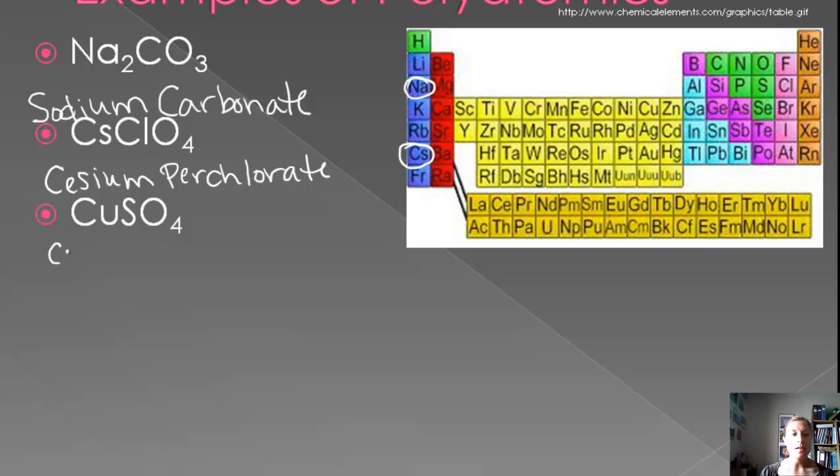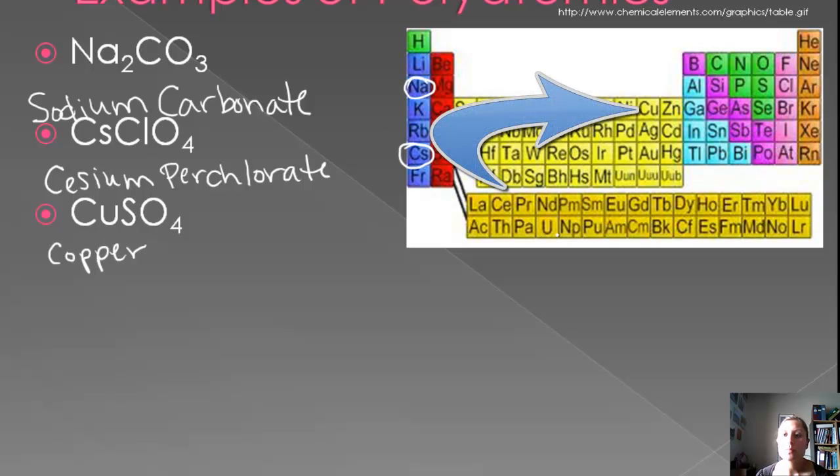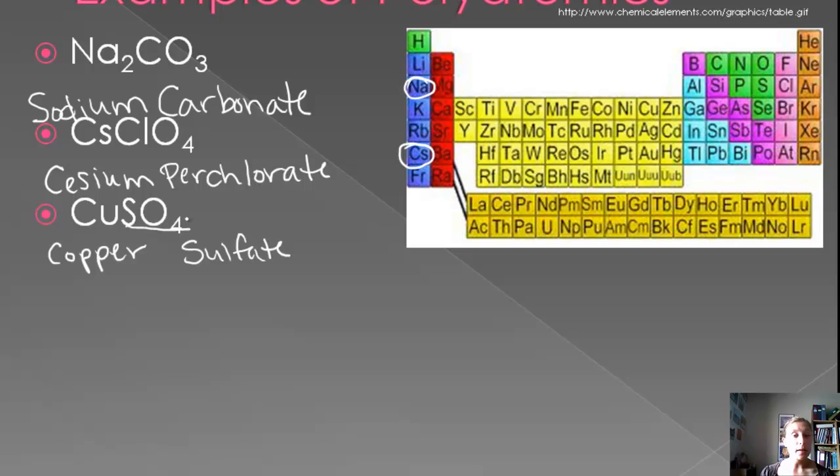Let's look at a third one. Cu is copper. Now let's see if we have a type 1 or a type 2. Copper is... Where is copper? I don't see it. Well, copper is a transition metal. So that means we're going to need Roman numerals. So now we need to look at our anion. SO₄ is sulfate. And I know from my polyatomic chart that sulfate is a minus 2. And so since there's one sulfate and one copper, copper has to be a plus 2 to make it neutral. And so it's copper, Roman numeral 2, sulfate.